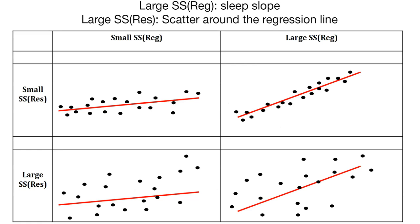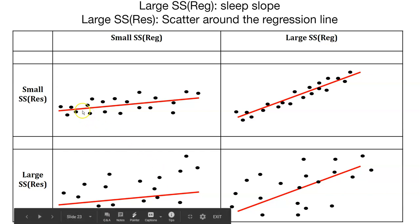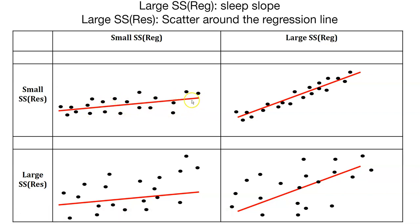Here's a visual way to interpret what we're looking at. What happens when the sums of squares for regression is small and the residual sums of squares is small? You get a very short or non-steep slope, but all of the points are very close to that regression line. What happens if you have all the points very close to the regression line, but now you have a steep slope? That would indicate a large sums of squares for the regression. That would mean your regression line does a pretty good job. All those data points are close to it, and it's steep.